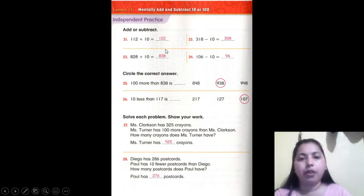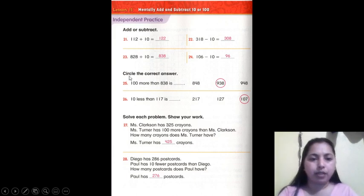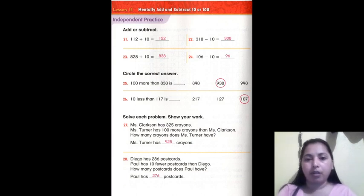Numbers 23 and 24, solve after class. Circle the correct answer. 100 more than 838 is equal to 938. 10 less than 117 is equal to 107. Less than is minus, and more than is plus.